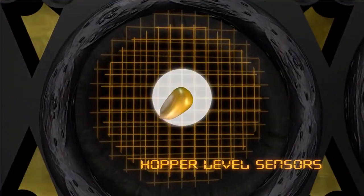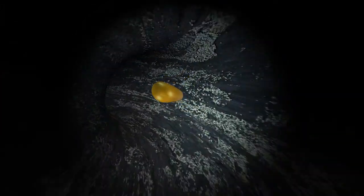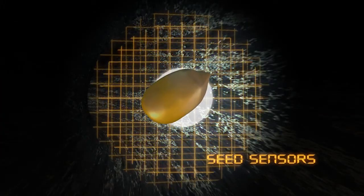The hopper level sensor monitors the seed level and alerts the grower if levels are low. Beyond the hopper, the seed sensors gauge the flow of seed and indicate blockages.